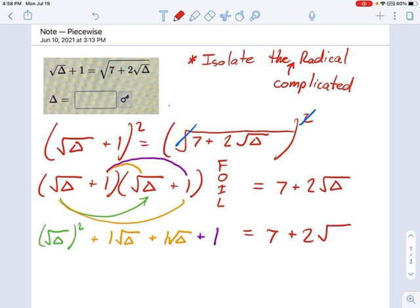We're not done yet, but I think the hard part is over. So, simplify all this. Square root of something squared just makes delta plus 1 delta and another 1 delta. That's going to make 2 square root of delta plus 1 equals 7 plus 2 square root of delta.